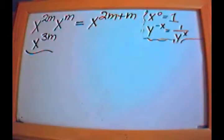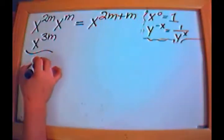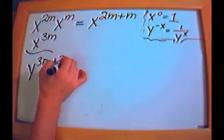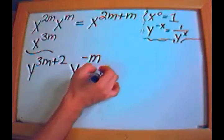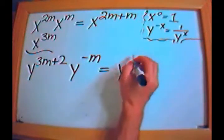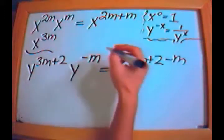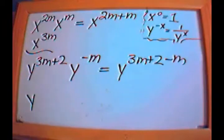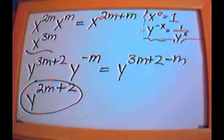Finally: y to the (3m plus 2) times y to the negative m. Same base — add the exponents: (3m + 2) plus (negative m) equals 2m + 2. The answer is y to the (2m + 2).